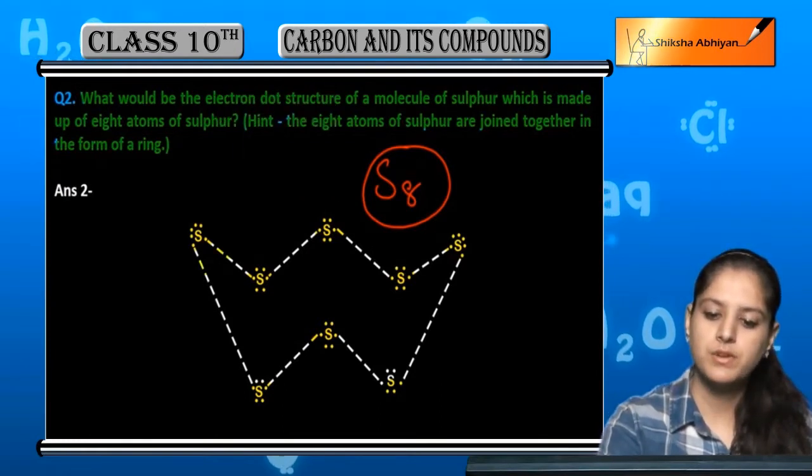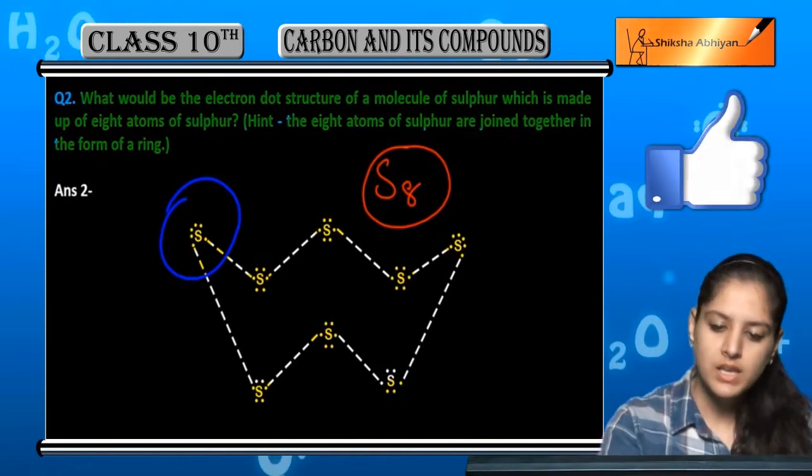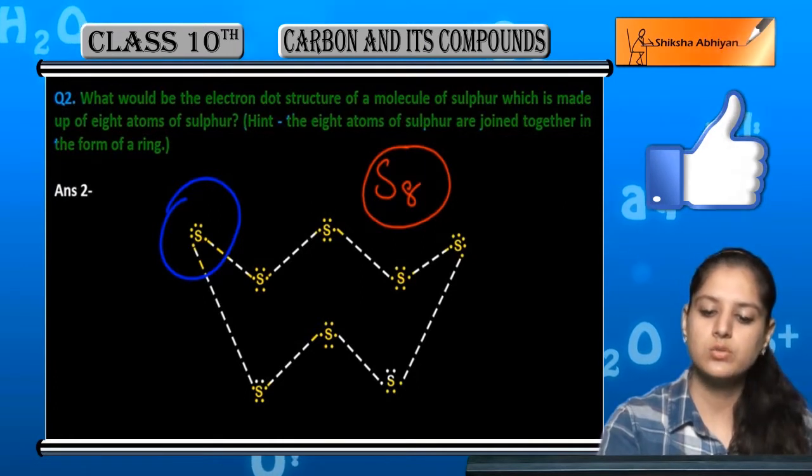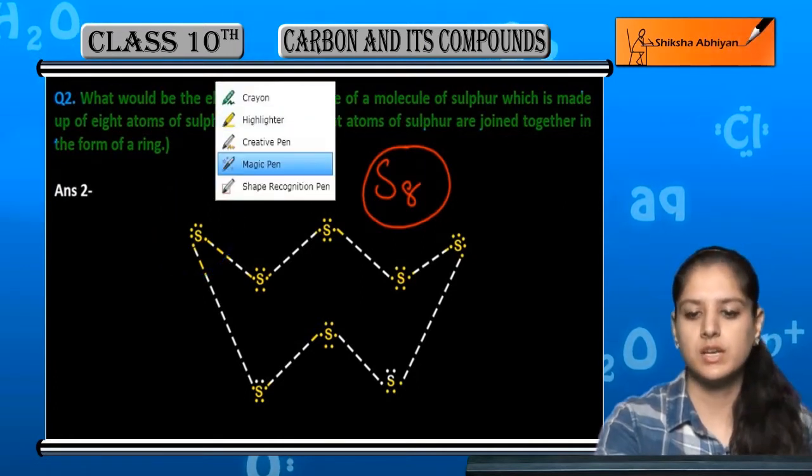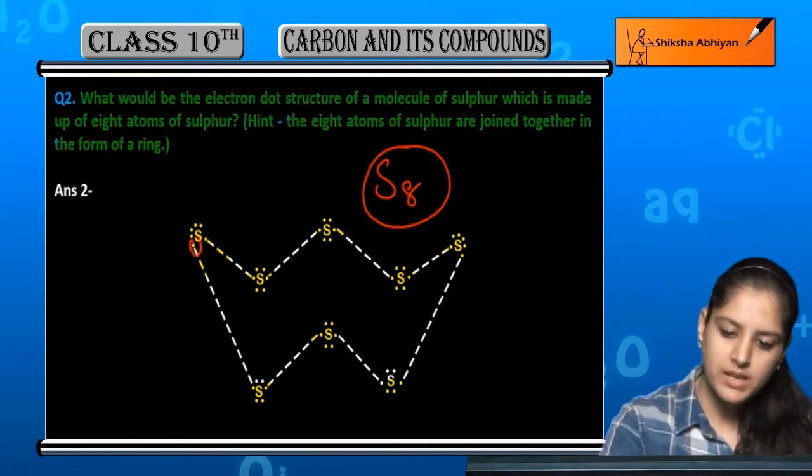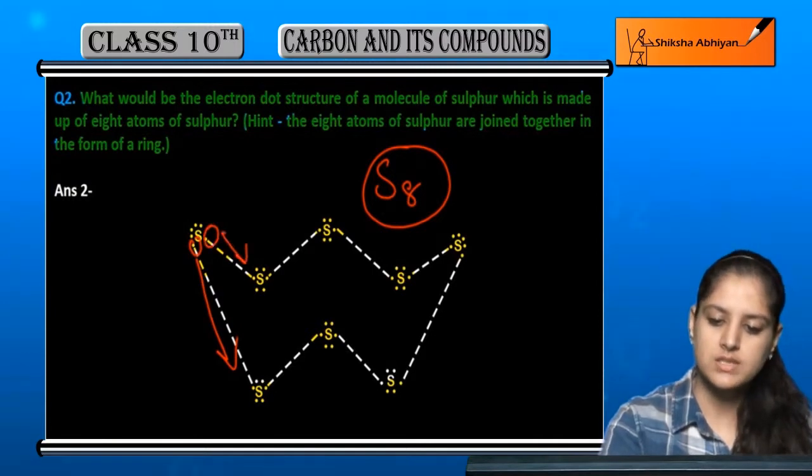Now you see, abh ek sulfur atom hai humare paas first wala. Iske andar hamne kya dekha ki ek electron usne ek sulfur ke saath share kar liya aur dusra electron usne dusre sulfur ke saath share kar liya. So you can see here, abh ye ek electron usne iske saath share kiya hai aur ye ek electron usne iske saath share kiya hai.